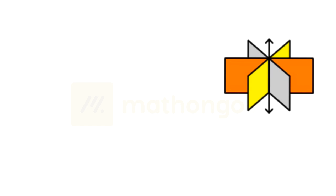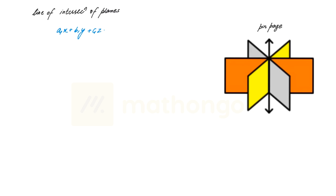To understand this with a diagram, consider that this is nothing but the pin page of your book. If we look at different pages, what will be the pin page common to all of them? It will be common to all. We have previously found the line of intersection of two planes. Now the target is to find the line of intersection of three planes. Assume three planes are given: A1x + B1y + C1z + D1 = 0, and so on.